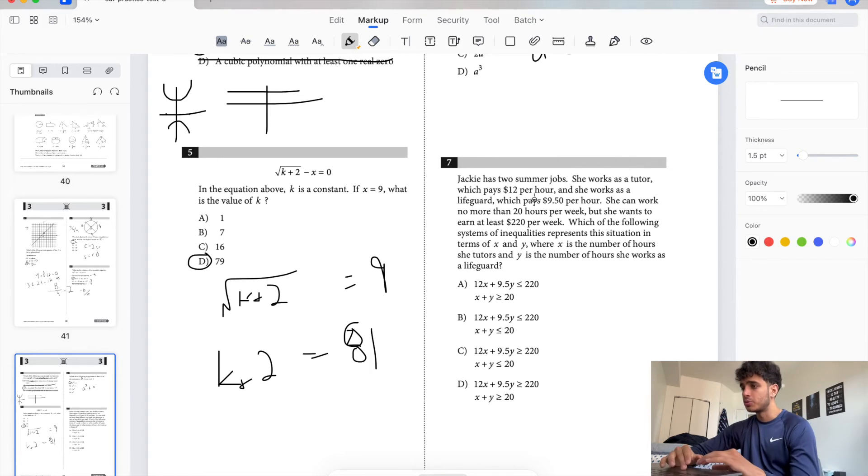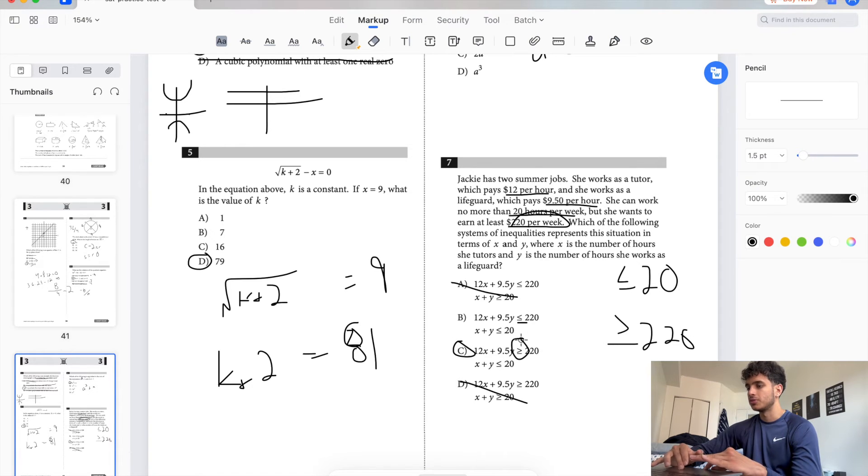Jackie has two summer jobs. She works at the zoo which pays $12 per hour, and she works as a lifeguard which pays $9.50 per hour. She works no more than 20 hours per week. So that's a constraint, less than or equal to 20 in terms of hours. So right here we see x plus y greater than or equal to 20, wrong. No more than, so that's the max you can hit. So we're left with B and C. She wants to earn at least $220 per week. So she wants to make any amount greater than or equal to 220. So in that case, it should be C.